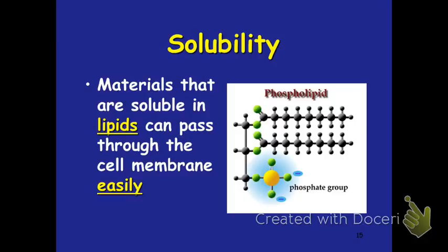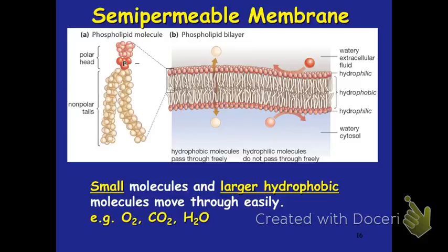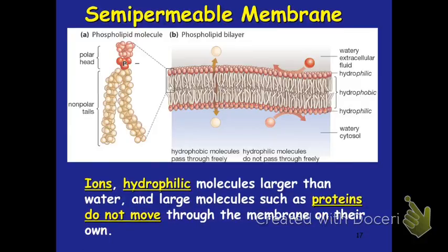Materials that are soluble in lipids are going to be able to pass through the cell membrane easily. Things that can dissolve in oil can pass through easily. Small molecules and larger hydrophobic molecules can move through easily — like oxygen gas and carbon dioxide. That's important because as we breathe, oxygen needs to move into our cells and carbon dioxide needs to move out as a waste product. Water is also able to move into cells easily because it is so small. Ions and hydrophilic molecules bigger than water have to use proteins through the membrane — they're going to need a protein channel or transport protein to move safely across.